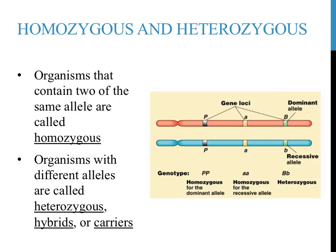Individuals that are heterozygous have two different forms of a gene. The prefix hetero means other or different — individuals that are heterosexual, for example, are attracted to individuals of a different sex. Heterozygous individuals can be called by a few different names: sometimes they are referred to as hybrids. Alternatively, they can be referred to as carriers, because while they don't have a particular recessive trait, they are able to pass it on to others.